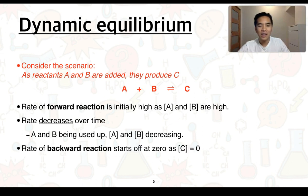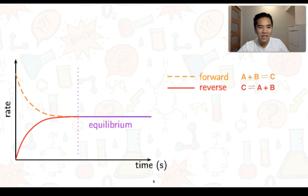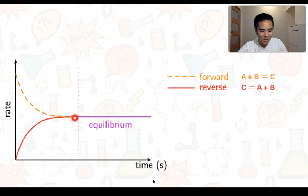In contrast, the rate of the backward reaction — C converting back to produce A and B — starts off at zero, as the concentration of C is essentially zero at the beginning. This rate increases over time as C is being produced. This can be summarized in a diagram: the rate of the forward reaction starts initially high and decreases, but doesn't reach zero — it levels off at a steady point.